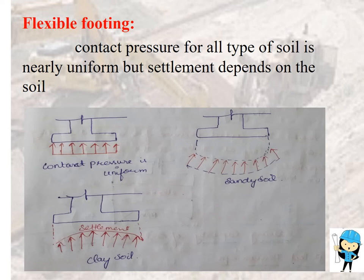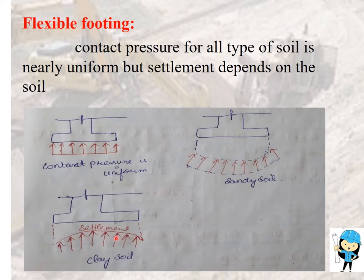We already know there are two types of footing — flexible footing and rigid footing. In the flexible footing, the contact pressure is uniform, but the settlement depends upon the type of soil. In sandy soil, the pressure distribution is parabolic in shape, and in clay soil, it has a different shape.